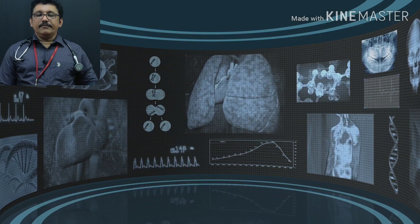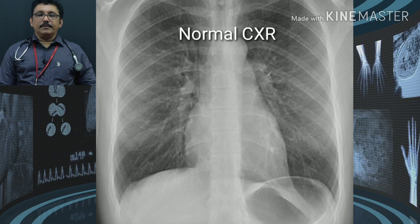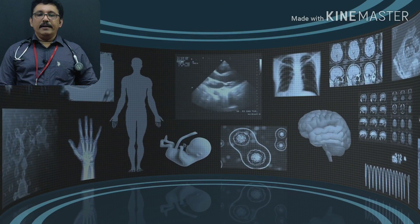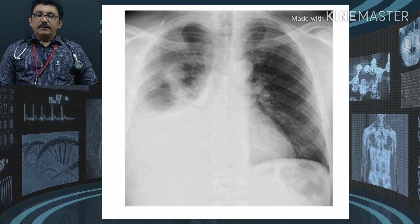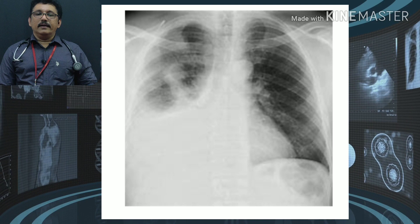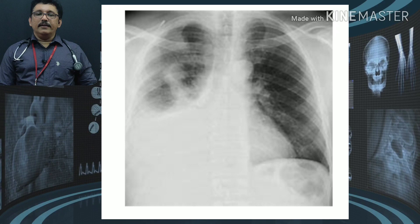On a normal PA chest X-ray, the bilateral cardiophrenic and costophrenic angles are sharp and not blunted. With pleural fluid, you see blunting of the angle. In this X-ray, there is blunting of the right costophrenic angle. In massive effusion, you may not see blunting but the whole diaphragm appears elevated on that side. Infiltrates visible above the effusion are mostly pneumonia — this is called a synpneumonic effusion.